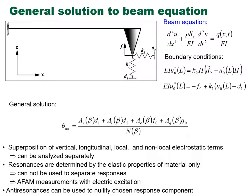This equation is linear, which means the total cantilever bending angle is the sum of four terms corresponding to vertical displacement, longitudinal displacement, local electrostatic force, and distributed force. Each contribution comes with a corresponding frequency-dependent term. In addition, there is a term in the denominator that defines the resonance structure of the equation.